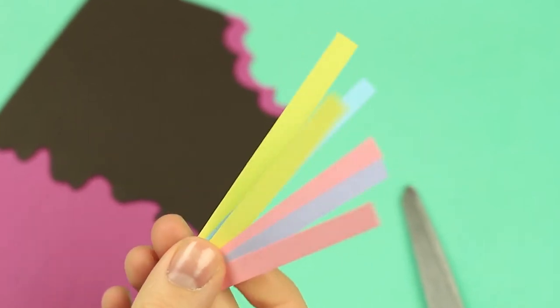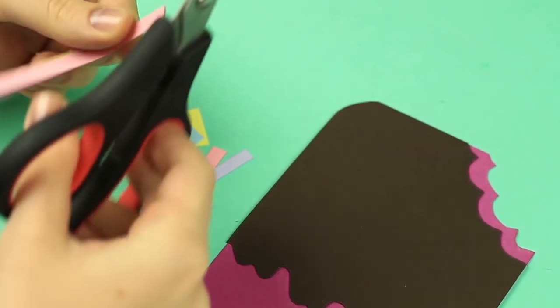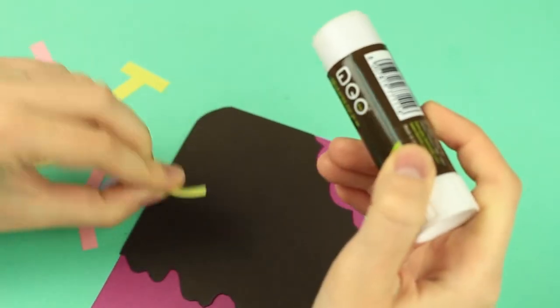Now take color strips, cut them into small squares, and embellish the ice cream.